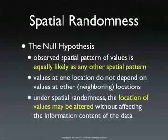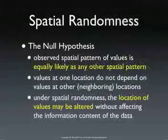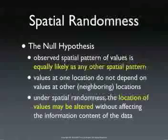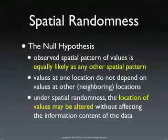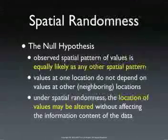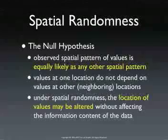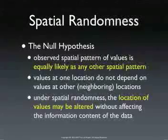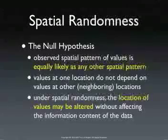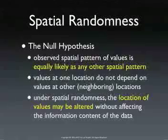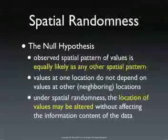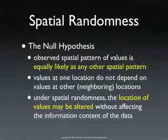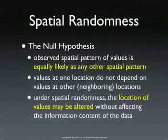Another way to put this is that the pattern you observe — the map you observe — is equally likely as any other map with the same data. In my Milwaukee example, I took the values for the census tracts and randomly allocated each value to a census tract. This is called random relabeling, and it gives us a spatially random map where location does not matter and every location is equally likely.